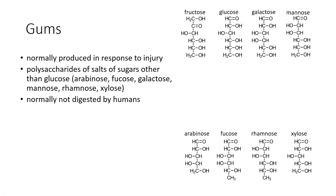Gums are normally produced by plants in response to injury. They are polysaccharides — salts of sugars other than glucose. When we think about plant material, the two main sugars are glucose and fructose. Gums are made of other materials: arabinose, fucose, galactose, mannose, rhamnose, and xylose. These can be five or six carbon sugars — carbohydrates just like other sugars. However, they may not be normally digested.